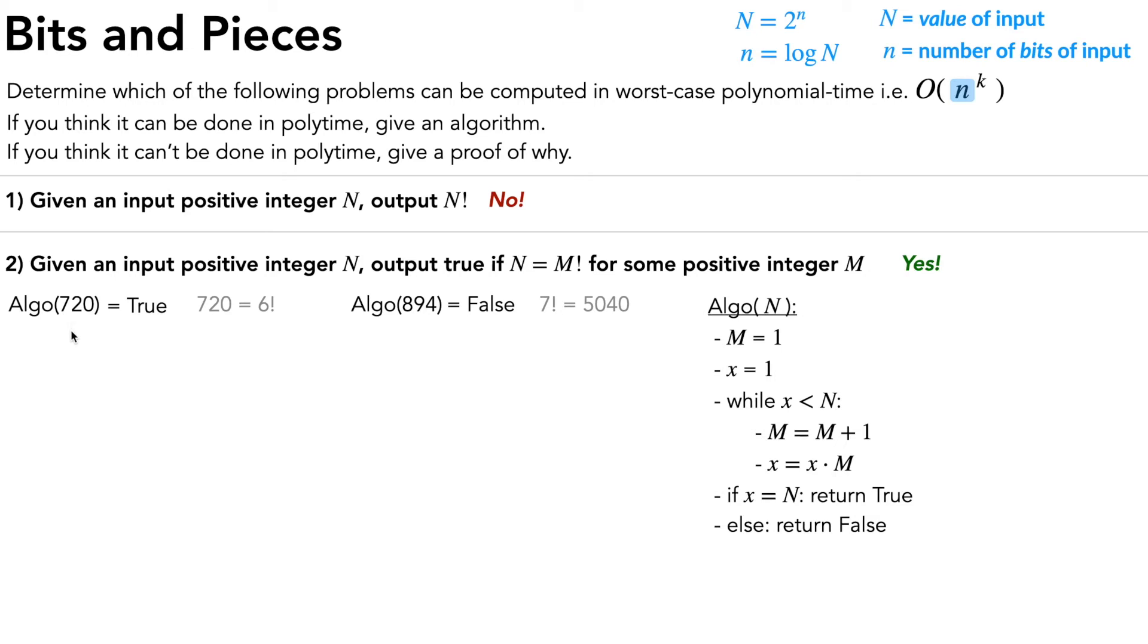So for this example, we have M and x, they both start off at 1. Then we increment M, we multiply x, increment M, multiply x, increment M, multiply x. At this point, you should see what we're essentially doing is we're incrementally multiplying x and calculating what M factorial is at each iteration. And then we keep doing these iterations until we hit what N is, in this case 720, and then we would return true.